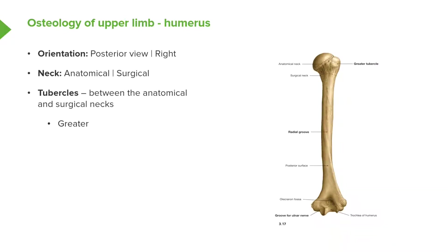If we look at the posterior view of the humerus, this is a right humerus viewed from the posterior surface. Here is the medial aspect, here the lateral aspect, and the head of the humerus pointing medially to articulate with the glenoid cavity. We can see the greater tubercle but not the lesser tubercle, as that is more on the anterior aspect. We can make out the anatomical neck between the head and the greater tubercle, and distal to that, the surgical neck. Fracture of the surgical neck can lead to some important functional deficits.